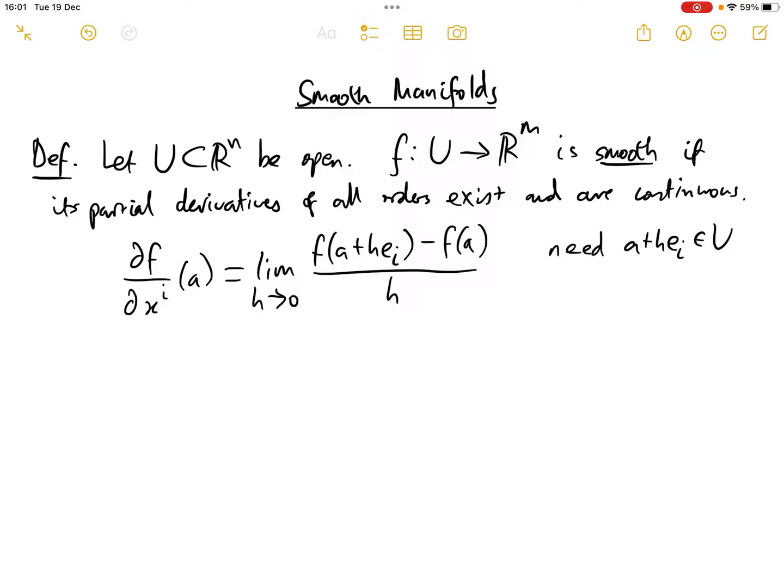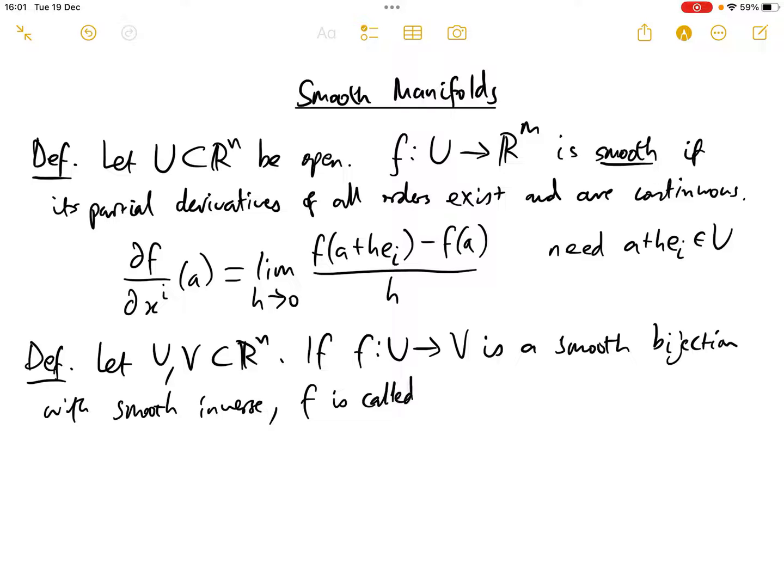So now another definition. Let U and V in R^n be subsets of R^n. If f from U to V is a smooth bijection with smooth inverse, we say that f is a diffeomorphism.